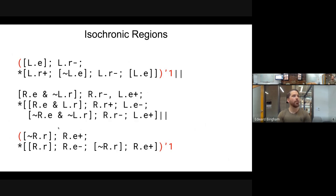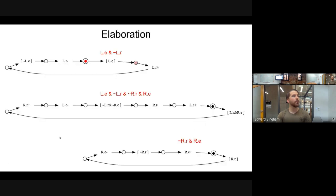We've generated our initial state encoding. Not only do we have the initial token on each process, but we also have an encoding of the value of each variable in each process based on what each process knows about the state of the whole system. The source only knows about L.E and L.R; the buffer knows about L.E, L.R, R.R, and R.E; the sync only knows about R.R and R.E.